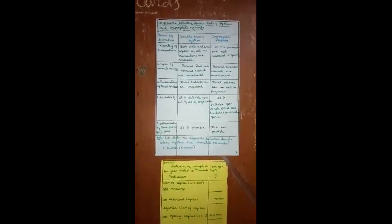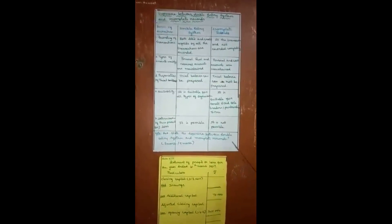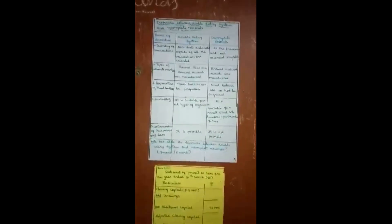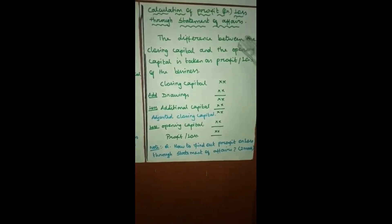This difference between double entry system and incomplete records may be asked as a 3-mark or 5-mark question. Now we see how to calculate the profit and loss through the statement of affairs.